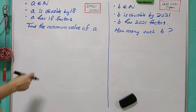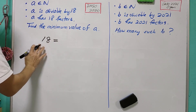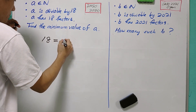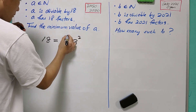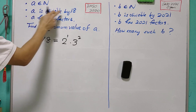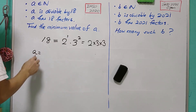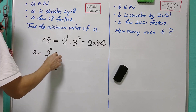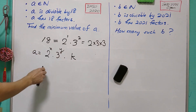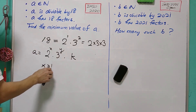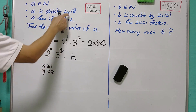We start with the first question: A is divisible by 18. We know that 18 equals 2 times 9, which is 2 times 3 to the power of 2. Since A is divisible by 18, A can be written as 2 to the power of X times 3 to the power of Y times some other factor, where X must be at least 1 and Y must be at least 2.